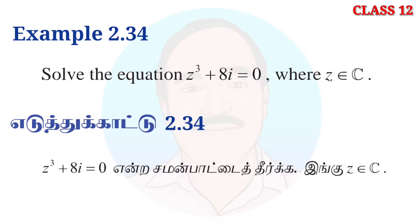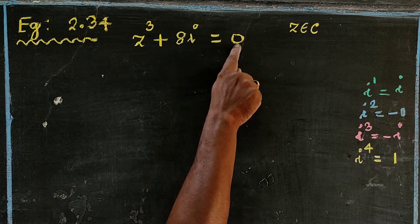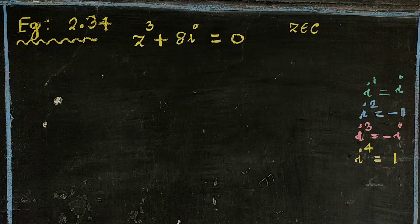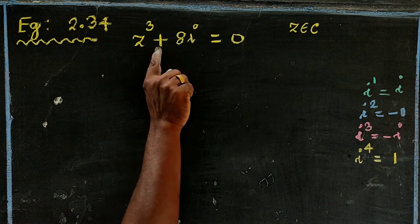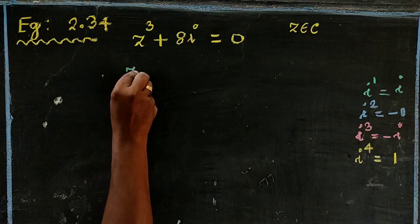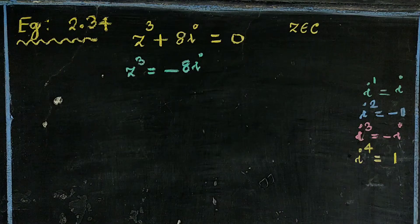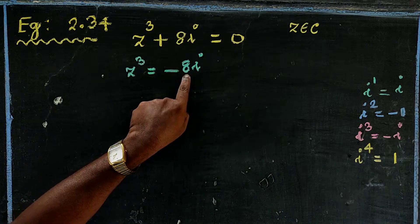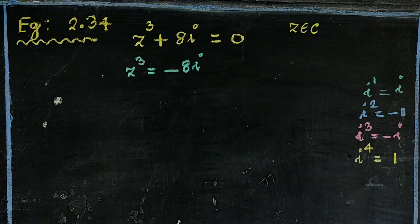Z cube plus 8i equal to 0. So Z cube is equal to minus 8i. We know that Z cube plus 8i is equal to minus 8i.